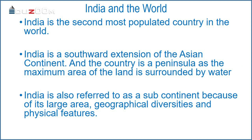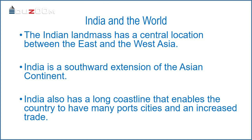The Indian landmass has a central location between East and West Asia. India is the second most populated country in the world. India is a southward extension of the Asian continent, and the country is a peninsula as the maximum area of the land is surrounded by water. It helps India to maintain its inland and overseas trade with other countries. India is also referred to as a subcontinent because of its large area, geographical diversities and physical features. India also has a long coastline that enables the country to have many port cities and increase trade activities.